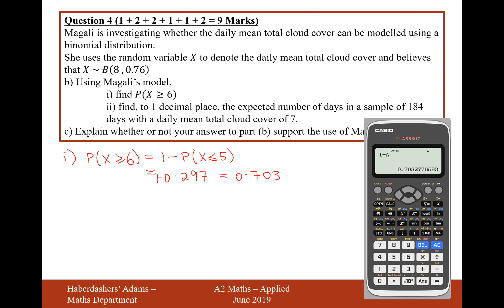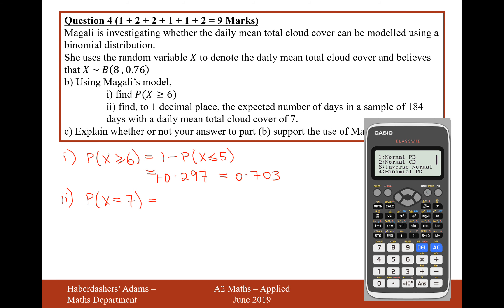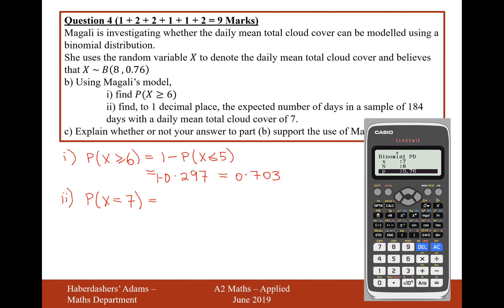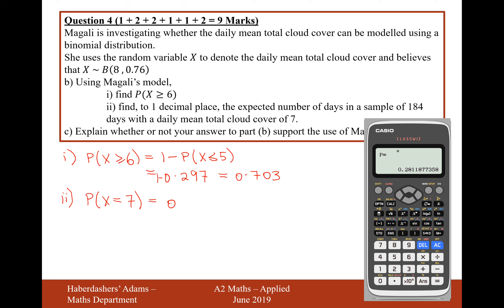So there we are, that's our answer for part b, i. And moving on to part 2 now, find to one decimal place the expected number of days in a sample of 184 days, with a daily mean total cloud cover of 7. So what we're looking for here is to work out the probability that a day, using Megali's model of binomial distribution, that it will be 7 octaves on that day. So I'm just working out the probability that we'll have 7 octaves on any one day using the model. So that's going to be a mode 7 again on the menu, hit number 7. This is now going to be a binomial PD calculation, because it's an exact outcome that I'm looking for. Hit variable again, and I want 7 octaves out of 8, with the probability of each octave being 0.76.